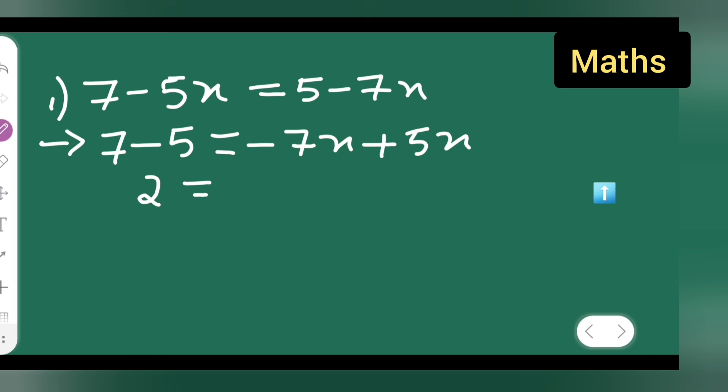x is equal to 2 divided by minus 2. Basically, 2 divided by 2 will get cancelled.